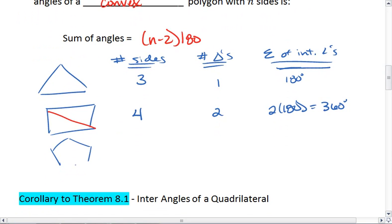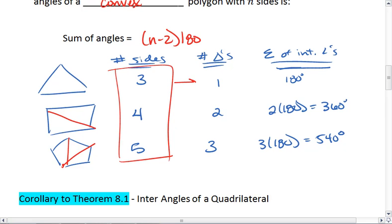A pentagon. We pick an angle. We can cut this into three triangles. So we have a five-side figure with three triangles. The sum of its interior angles is 540 degrees. Notice that however many sides we have, the number of triangles we can create is that number minus 2.